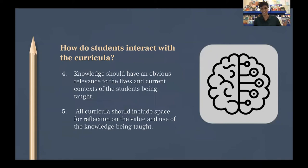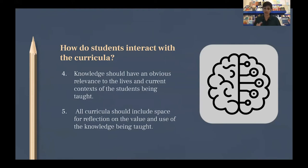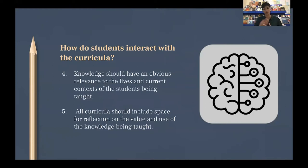But it has to mean something to students. Knowledge should have an obvious relevance to the lives and current context of the students being taught — it has to be authentic. You can't ask someone to care about something they don't care about; it has to be important for them to go out and make a change. But there also has to be time for them to stop and think about what it all means to them. All curricula should include space for reflection on the value and use of the knowledge being taught. We can't just do an exam and move on. We can measure how much you know, but we should also ask: why do you want that knowledge? What are you going to do with it? Why is that knowledge important to you? It's just as important a question as what do you know?